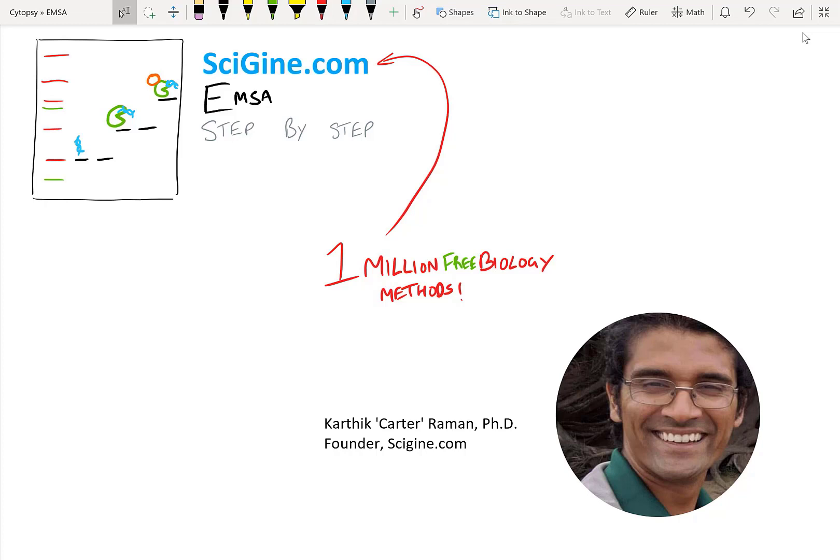Visit scigin.com. Once you know that you want to do EMSA, scigin.com is a search engine for biology and biochemistry methods where we've got over a million different biology methods indexed from all the different articles out there. Just type in EMSA and your protein of interest and you'll have a protocol that you can actually use in your lab. Let's get going.